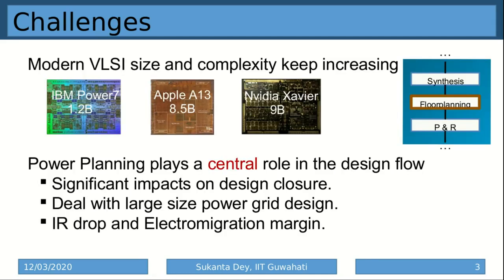Modern day VLSI size and complexity are increasing. The number of transistors for a mobile processor is crossing 10 billion, and in future the number of transistors for a simple mobile processor will be 20 billion or so. Initially RTL synthesis is done, and after synthesis the layout is made. In the layout stage, floor planning is the main stage where all the functional blocks are planned, placed, and routed.